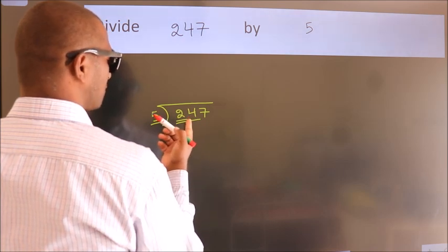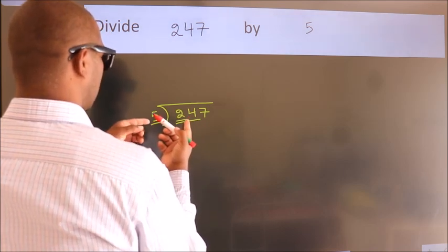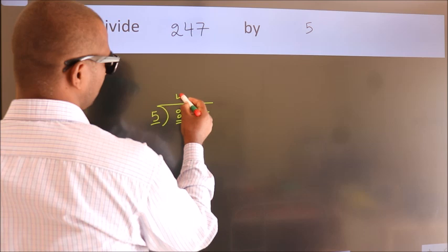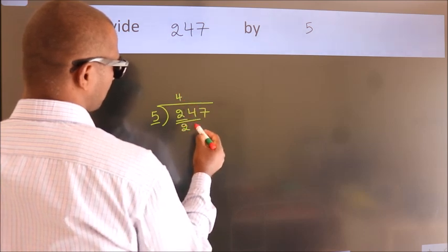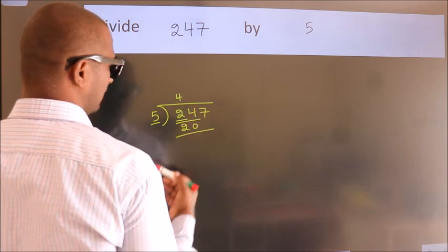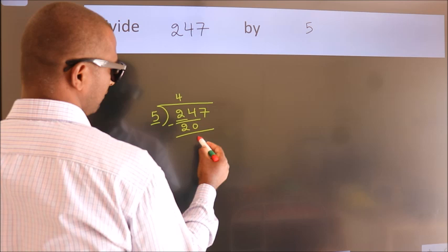A number close to 24 in 5 table is 5 times 4 is 20. Now we should subtract. We get 4.